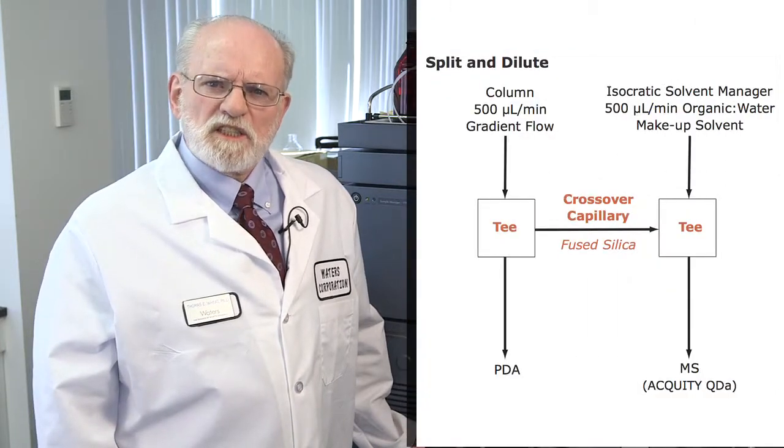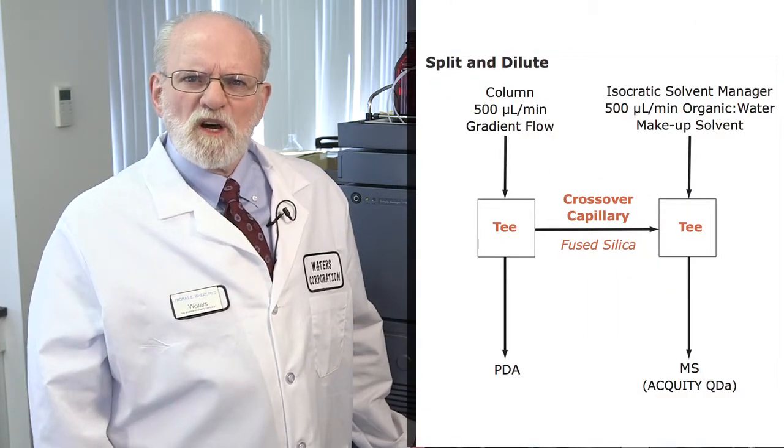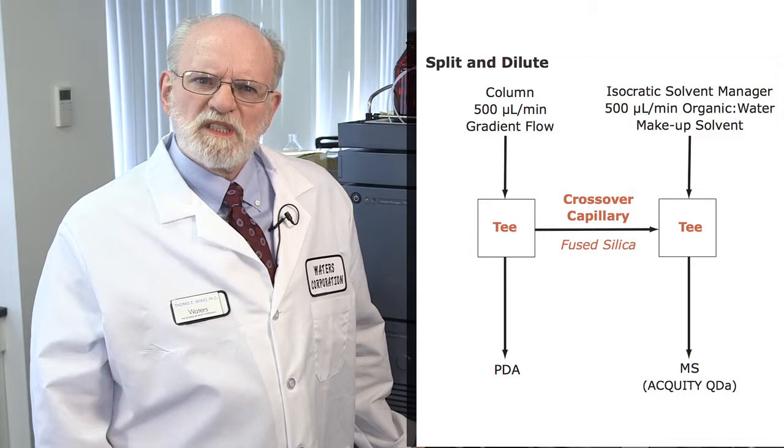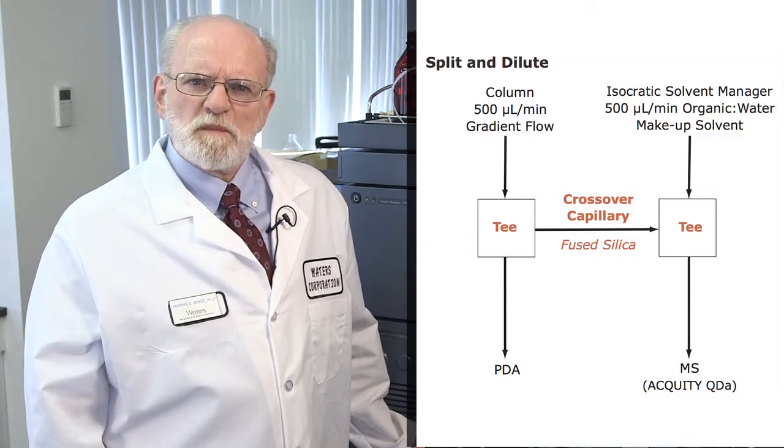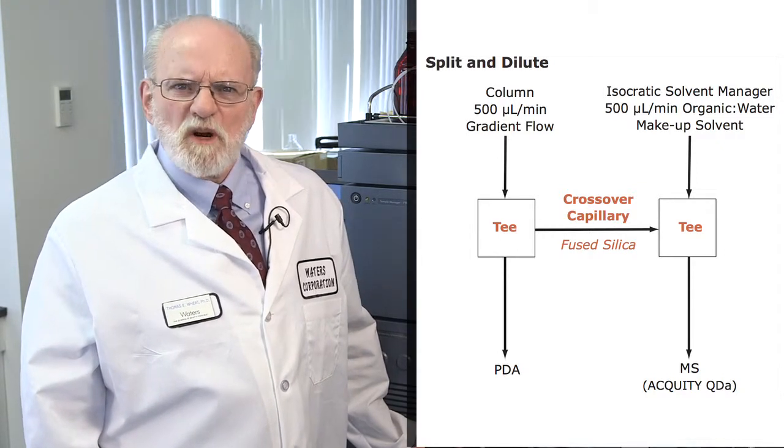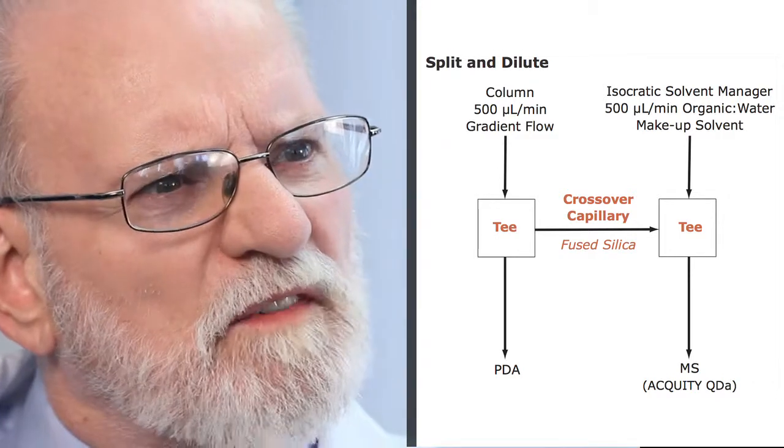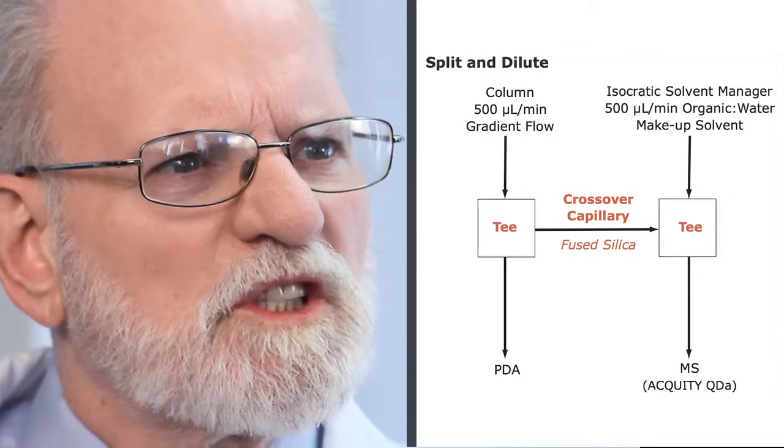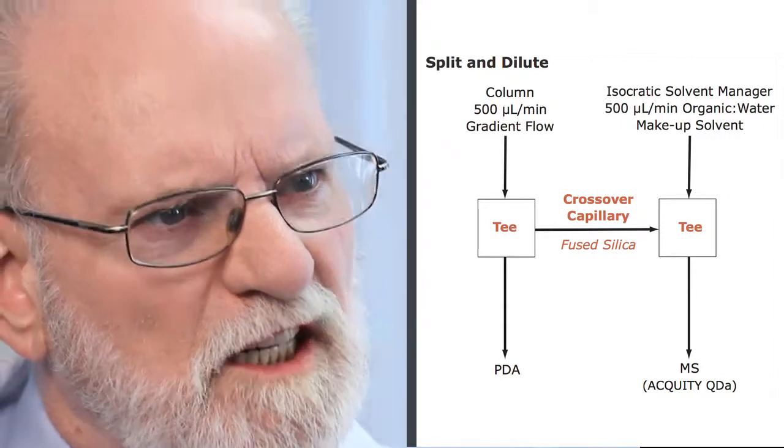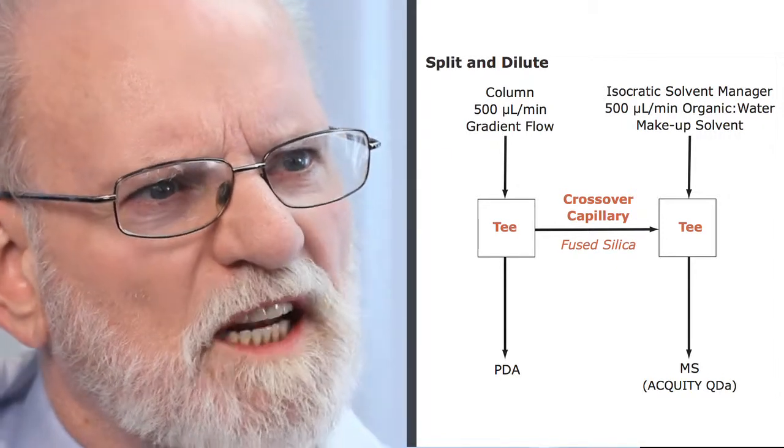Let's look at the schematic. Here, the flow from the column comes to a T. Most of the flow continues to the PDA, while a fraction crosses over to flow toward the MS detector. The fraction of the diverted flow is determined by the length and inner diameter of the crossover capillary.